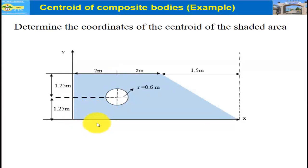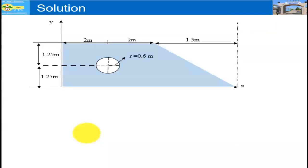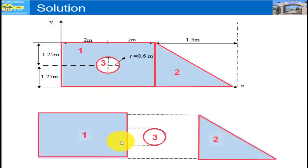We can see the composite body is made up of several shapes: rectangle, triangle, and circular shape. The first step to tackle such problem is to divide the composite shape into simpler known shapes. Shape number one is rectangle, shape number two is triangle, and shape number three is circular. The radius of the circle is 0.6 meter.